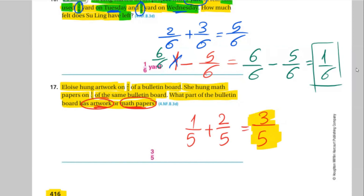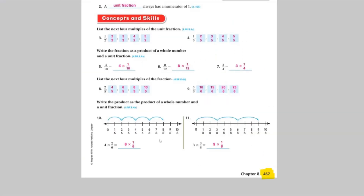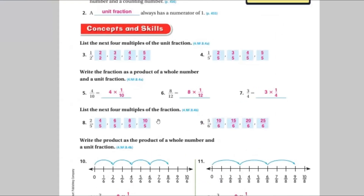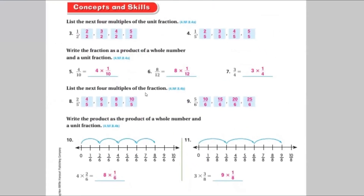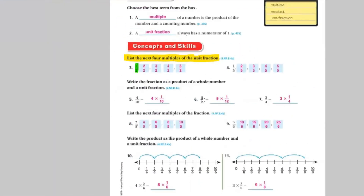Okay guys, write this down and then we're going to move to chapter 8. List the next 4 multiples of the unit fractions. So he's asking to write the multiplication table of the unit fraction given. The unit fraction here is 1 over 2, so you have to write the multiplication table of one-half.